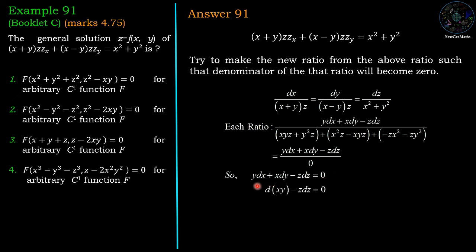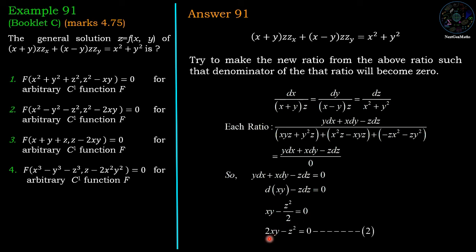Rewriting the first two terms: y·dx + x·dy = d(xy). So d(xy) - z·dz = 0. Integrating both sides: xy - z²/2 = constant, which simplifies to 2xy - z² = c₂. This is the second invariant.